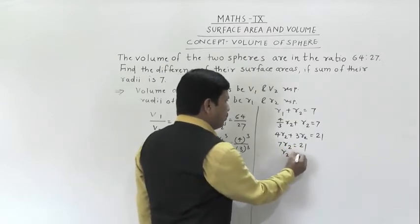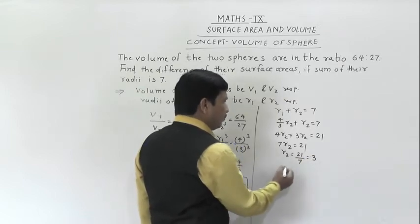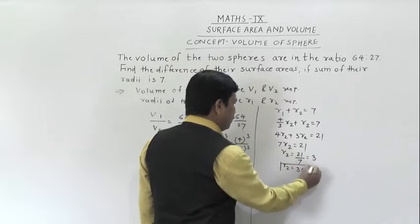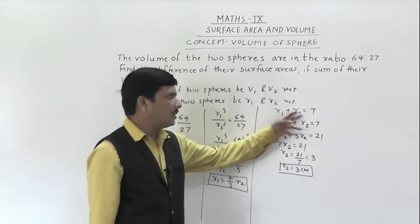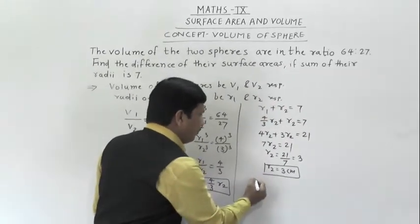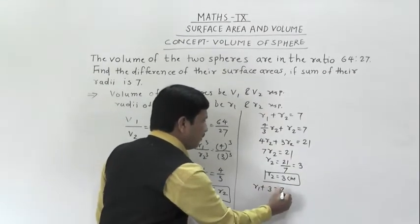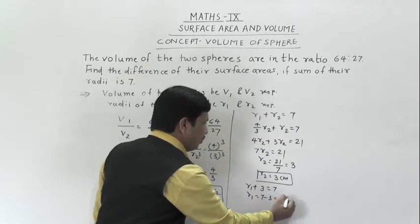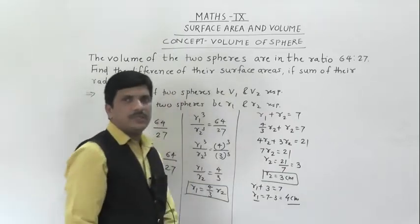R2 = 21/7 = 3 centimeters. Now substituting back into R1 + R2 = 7: R1 + 3 = 7, so R1 = 4 centimeters. Therefore R1 is 4 centimeters and R2 is 3 centimeters.